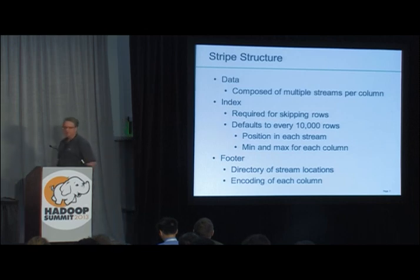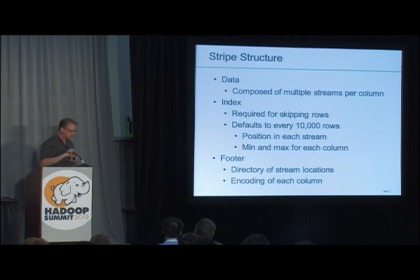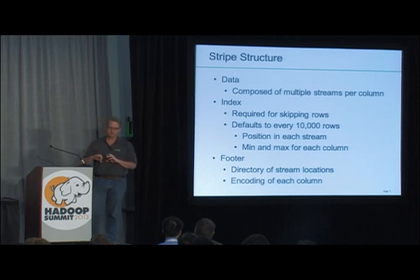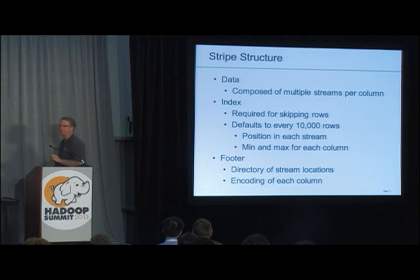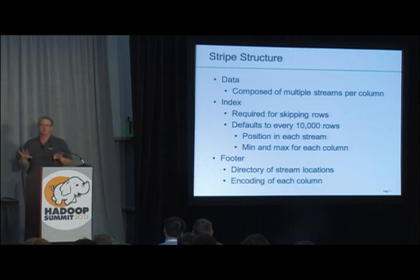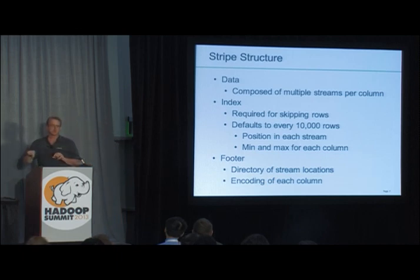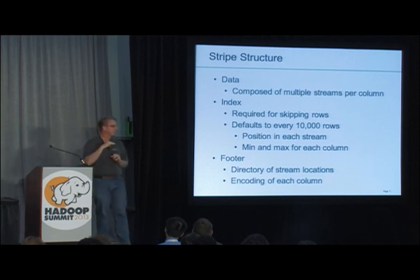The footer also contains statistics about the data. Because I know whether a column is integer or string, I can store the min, max, and sum. This will enable Hive to answer questions like COUNT(*) without launching a MapReduce job — something that really annoys me. ORC only needs to read the last 30K of each file to get that metadata. Finally, there's a postscript that records how the file is compressed and how large the compressed footer is.